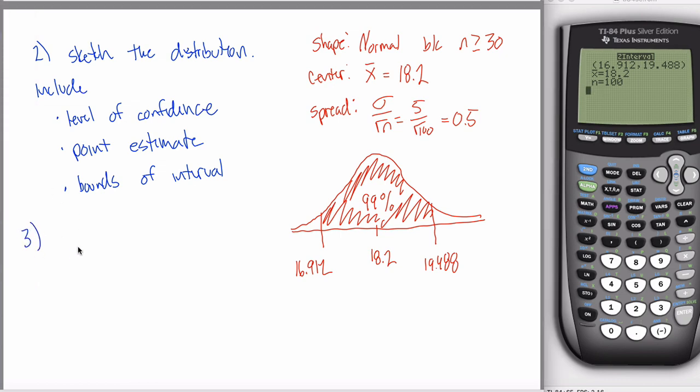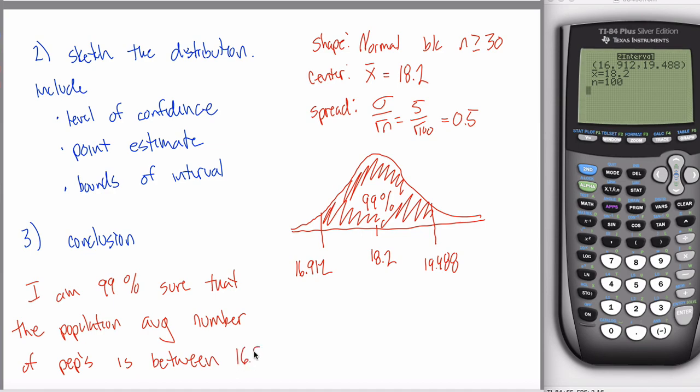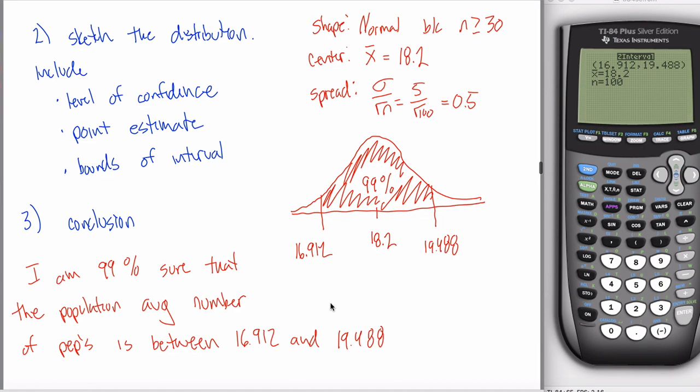Step three will say state your conclusion or interpret your results or essentially tell me what this means in a sentence or two. Remember, these numbers are referring to the population average. This is a sample average. These are referring to the population average. So what you have to make clear is that you're 99% sure or confident that the population average number of pepperoni on a large Papa Murphy's pizza is between 16.912 and 19.488. Not 100% sure, I'm pretty sure I'm 99% sure. That's what these examples look like.